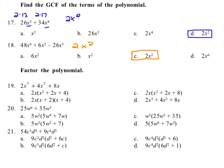For problems 19, 20, and 21, we're also going to write what's left when we factor something out. For number 19, they're all multiples of 2 and they all have at least one x, so we can factor out a 2x.